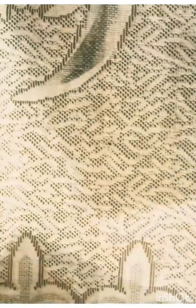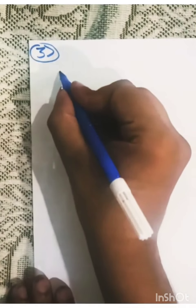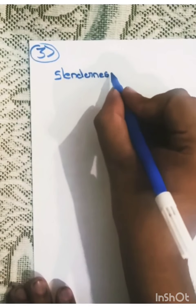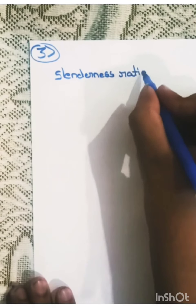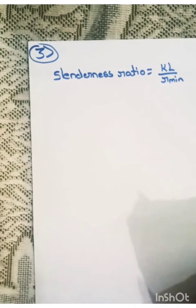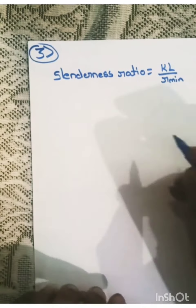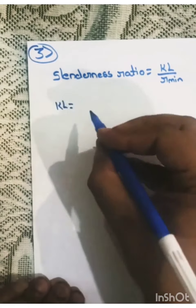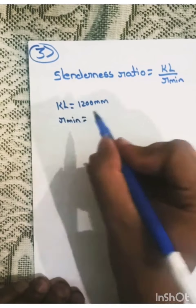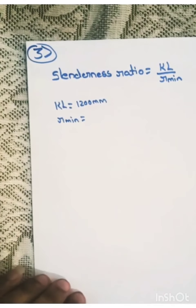So next step is to find the slenderness ratio. That is KL by R minimum. So KL, we have 1200 mm